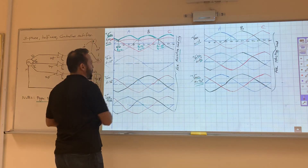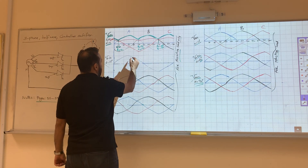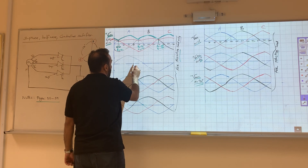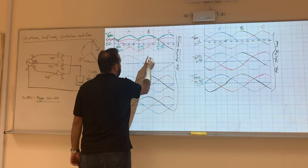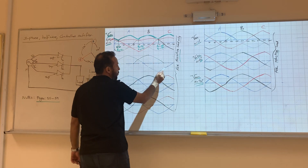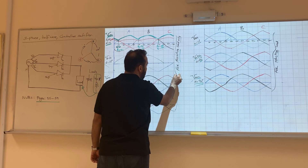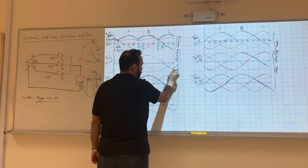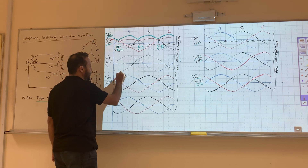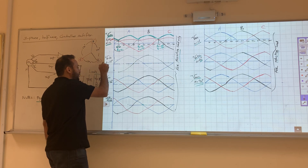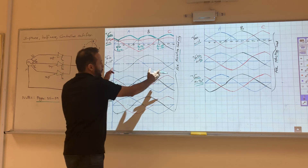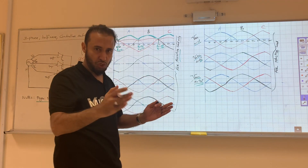We draw phases A and B starting from 120 on the old scale, marking peaks and zeros across the 0 to 360 degree window we are interested in. We are interested only from zero to 360 degrees — that is the window we are looking at.